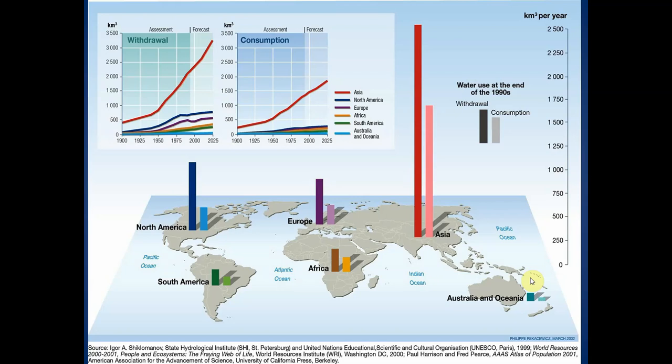Continuing our discussion on water resources, I want to make a correction first. I was looking through the audio file from the first half of this discussion, and I noticed that when we were looking at the picture of the major aquifers of the U.S., I pointed to New York and said Texas. That upper midwestern highly productive aquifer stretches from New York in the east, not Texas, to Montana in the west. It was deposited during the last ice age by the movement of glaciers.